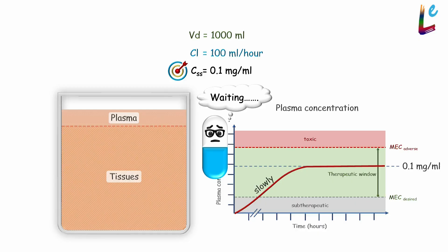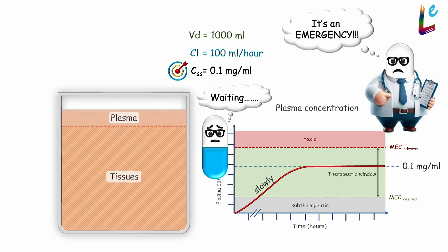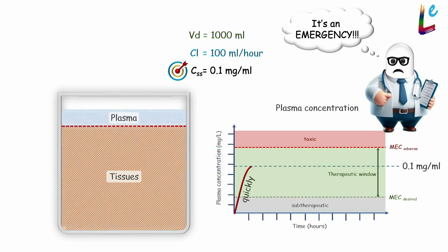But sometimes we might not be able to wait so long. For example, in medical emergencies where achieving target plasma levels quickly is critical. Here to achieve the target steady state plasma concentration rapidly, we need to load the body with a large initial dose. This is called the loading dose.